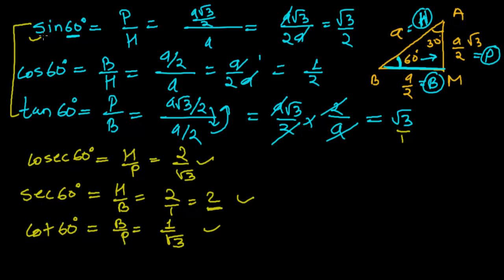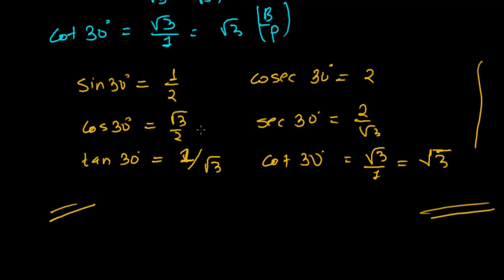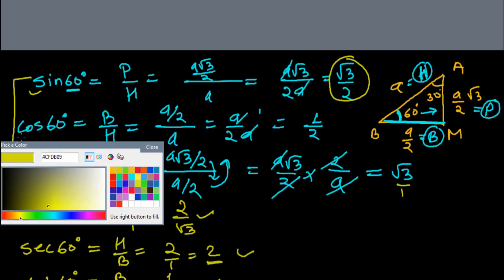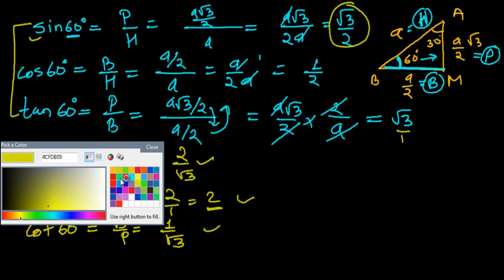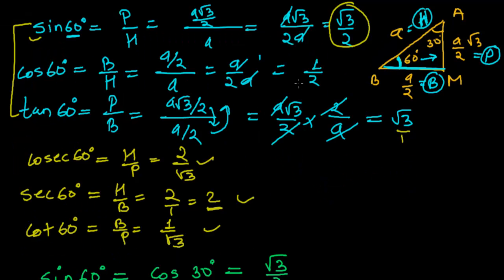Now let's observe these values. Sin 60 is root 3 upon 2. Going back to the 30-degree values, cos 30 is also root 3 upon 2. So we can write: sin 60 equals cos 30 equals root 3 upon 2.